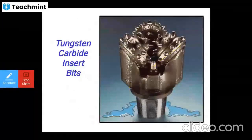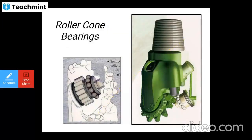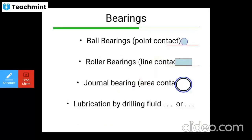Looking at the tungsten carbide insert bit schematic, you can see the bearing types: roller cone bearings, ball bearings, point contact roller bearings, line contact journal bearings, and area contact lubrication for drilling fluids.